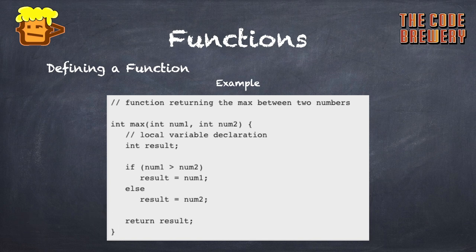As we can see through the example, we have written a function called max. Int is the return type which the function will return. Max is the function name. Int num1 comma int num2 is the parameter list.